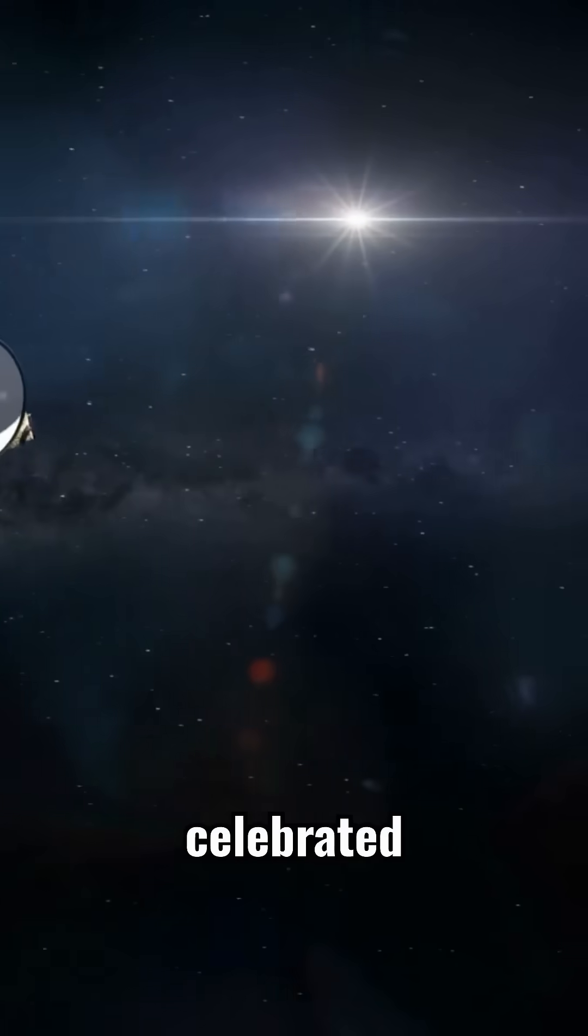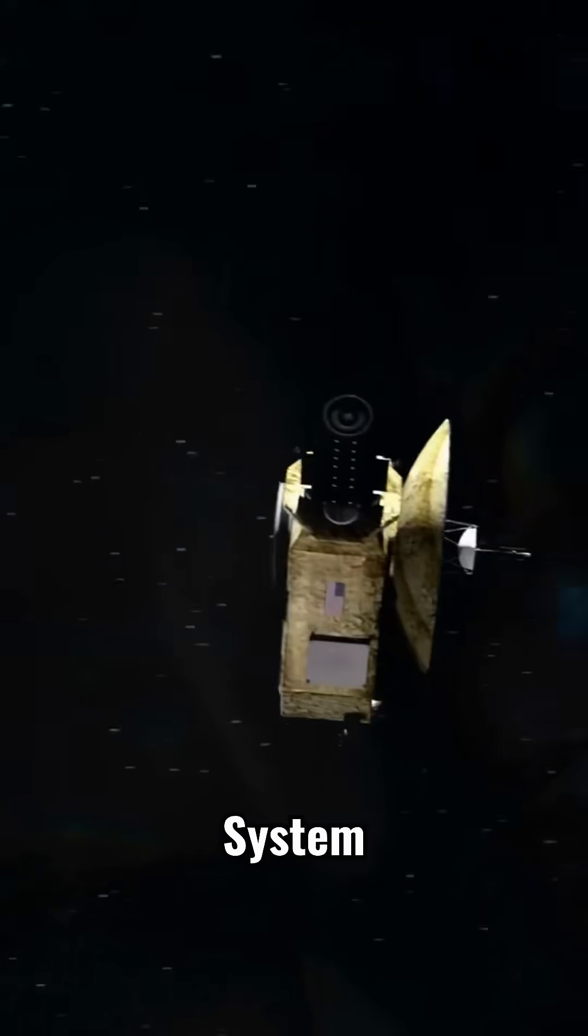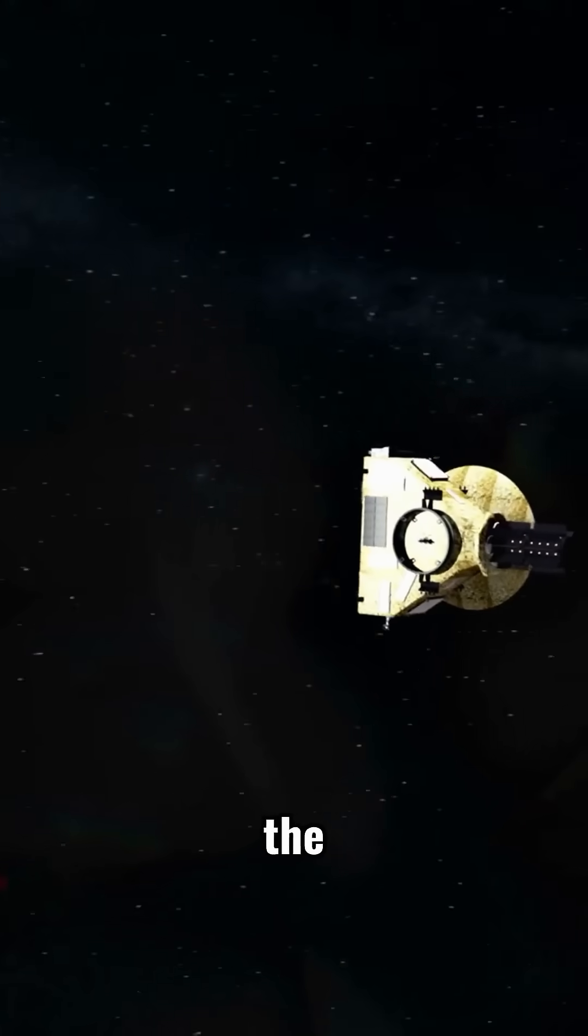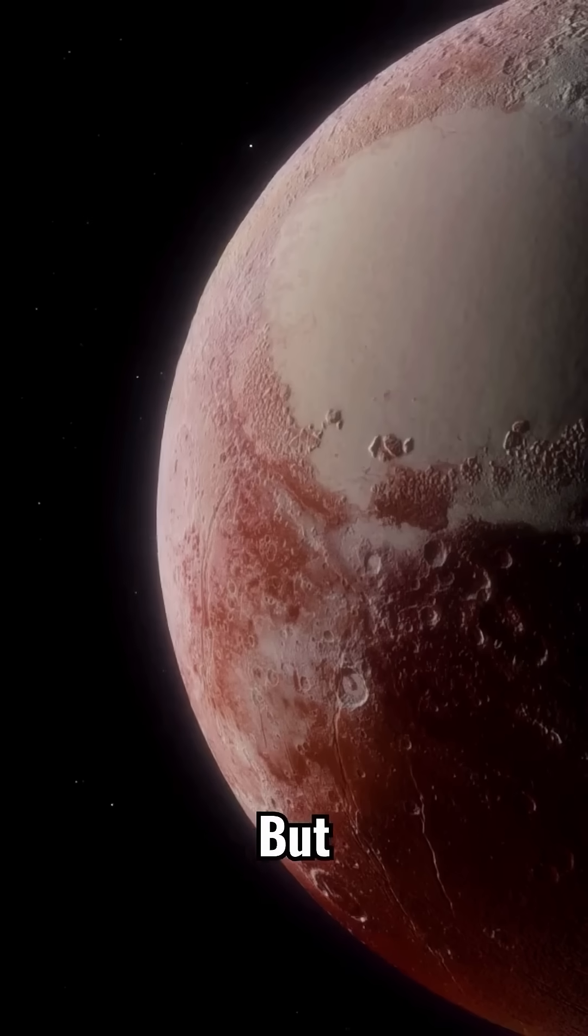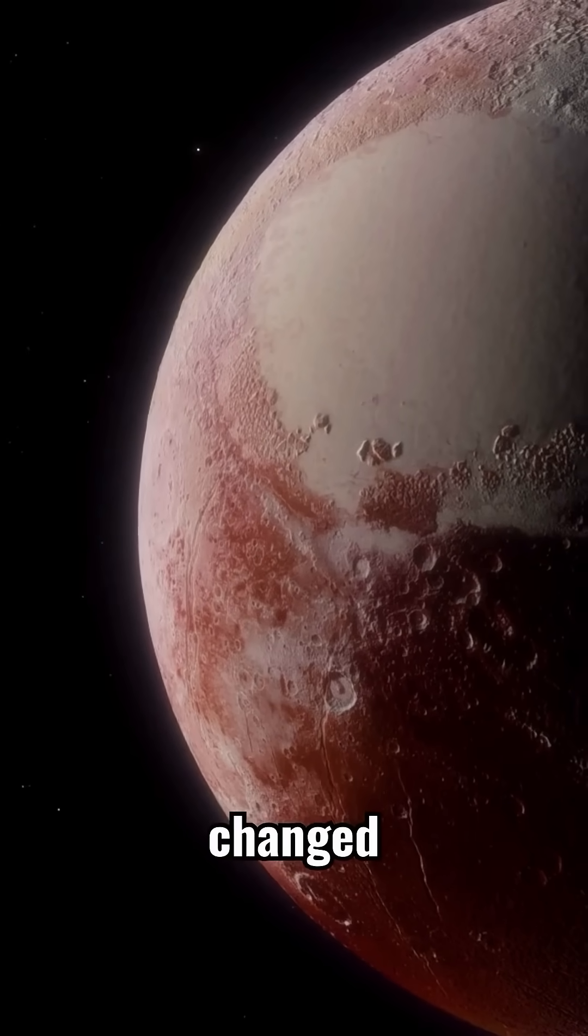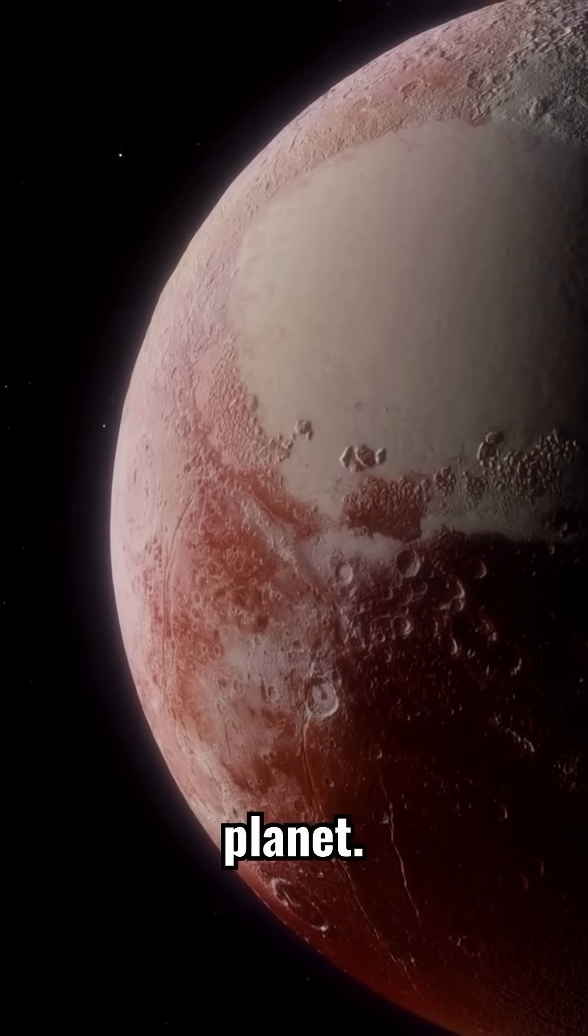In 1930, Pluto was celebrated as the ninth planet of our solar system, a tiny world at the edge of the sun's reach. But in 2006, Pluto's status changed forever. It was reclassified as a dwarf planet.